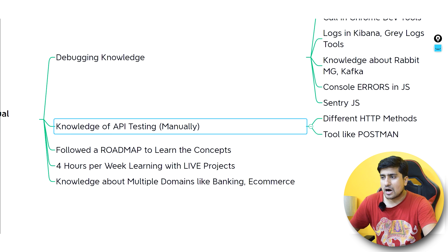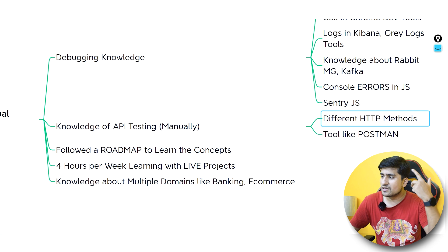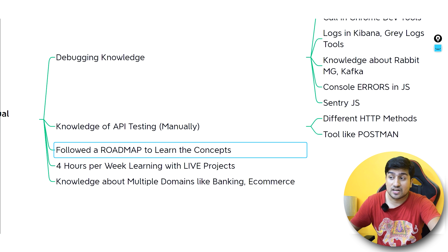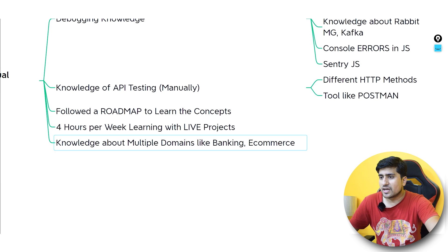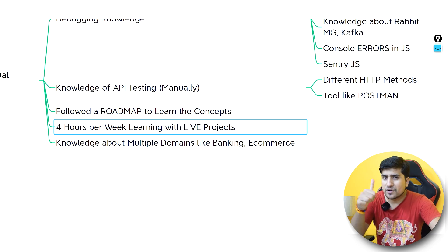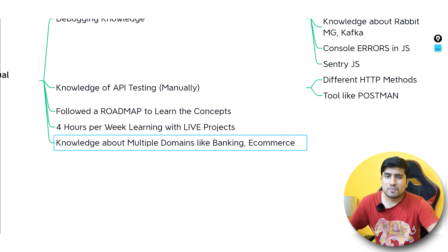API testing is also important — as a manual tester right now, you need to know how to do manual API testing. Learn about the different HTTP methods and the Postman tool; this is mandatory. You can follow my 30 Days of Postman series for more details. I followed a specific roadmap, and I dedicated about four hours per week to learning with live projects — using staging websites from my previous company and a friend's company to prepare test plans, test cases, and test reports.